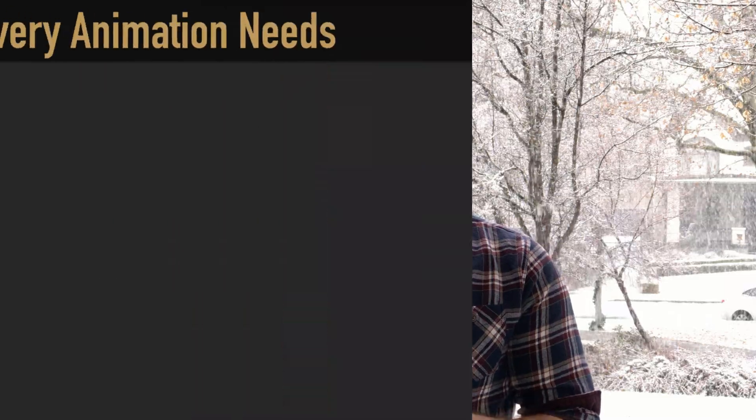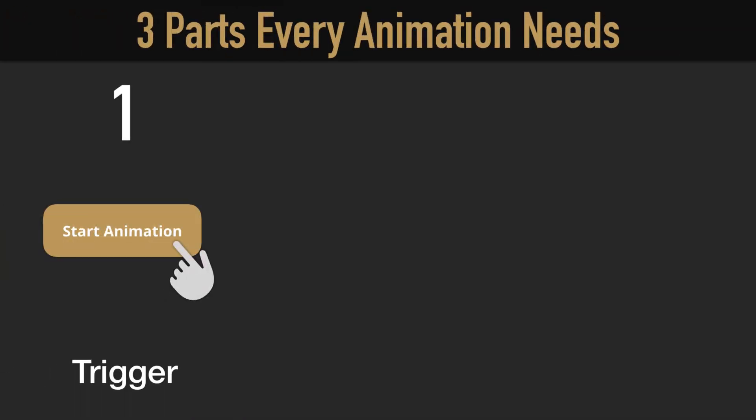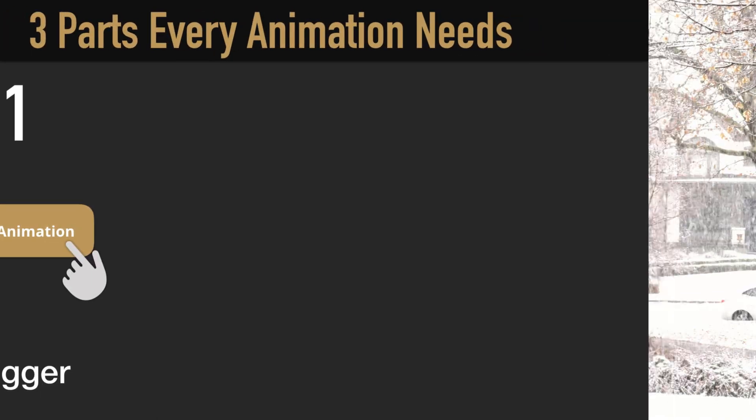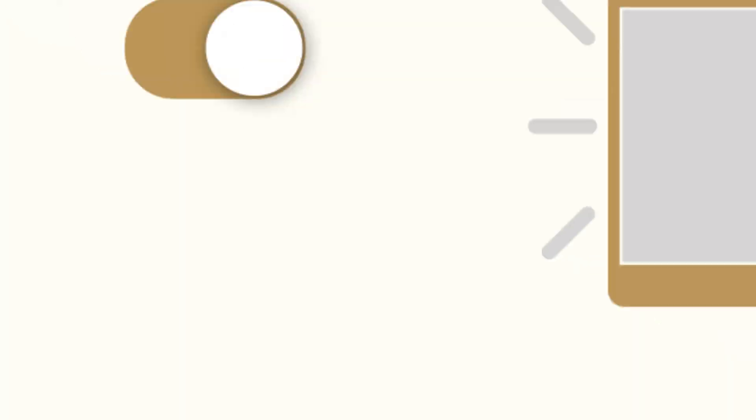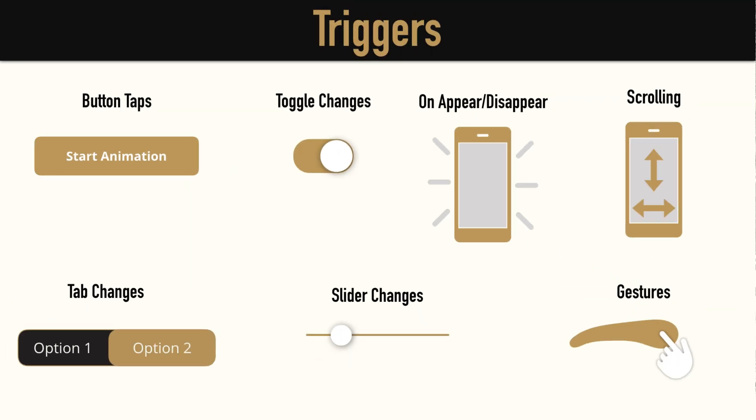The three parts for every SwiftUI animation: number one, there has to be some kind of trigger — something that starts the animation. This can be a button tap, sliding a slider, using a stepper, some kind of event happening. It could also be scrolling, or there's an event called onAppear for your views — when a view appears, it can kick off an animation. That's number one.